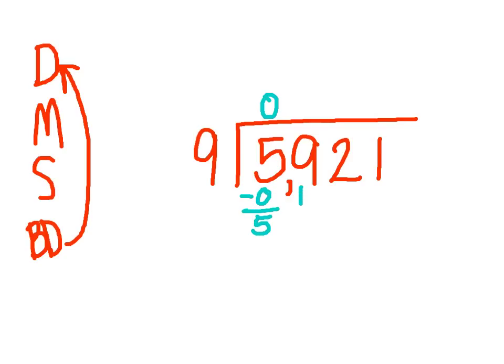The next step is to bring down the 9. Now I need to think how many times does 9 go into 59, and I know that 9 times 6 is 54. After I multiply 6 times 9 and get 54, I subtract and I get 5.